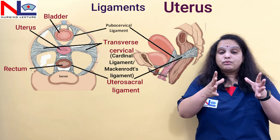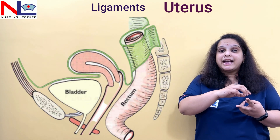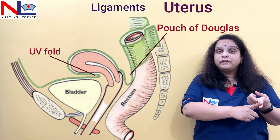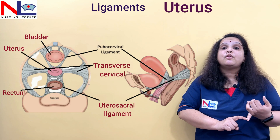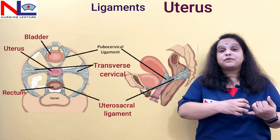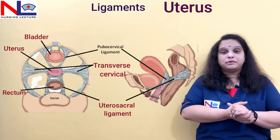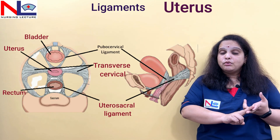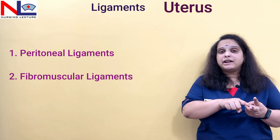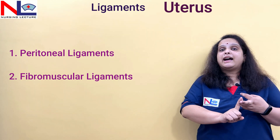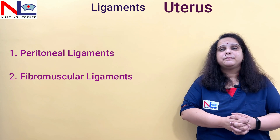All these ligaments help the uterus to maintain its position. Importantly, the ligaments are divided into two groups: the peritoneal ligaments — which include the broad ligament, the utero-vesical fold, and the pouch of Douglas — and the fibromuscular ligaments, which include the round ligament, uterosacral ligament, cardinal ligament, and the pubocervical ligament, which extends from the cervical region to the symphysis pubis. These ligaments collectively support the lower part of the uterus and help maintain its position.